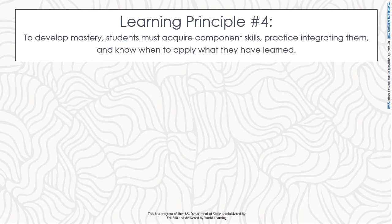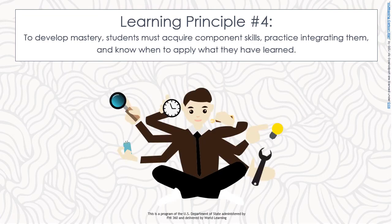Learning principle number four: to develop mastery, students must acquire component skills, practice integrating them, and know when to apply what they have learned. This means that if a task requires the use of multiple skills, it is better to have the opportunity to practice each skill in isolation first. The combination of all skills will go better once each subskill is given its due practice.